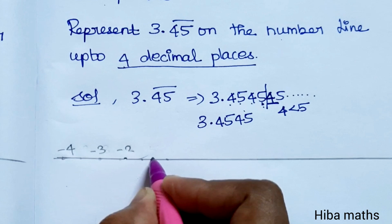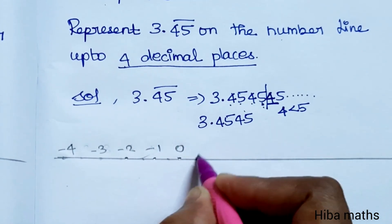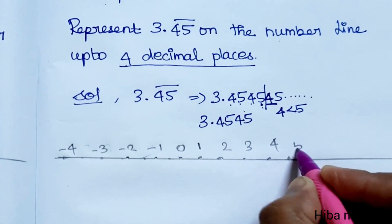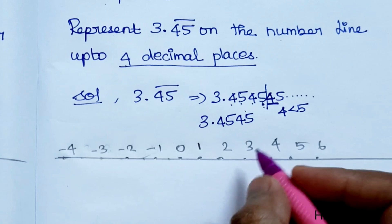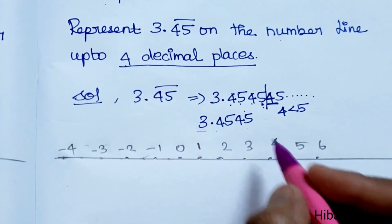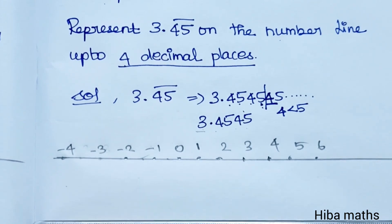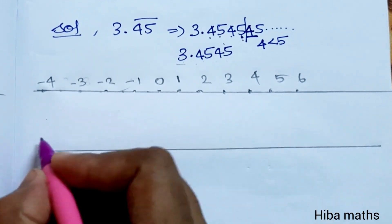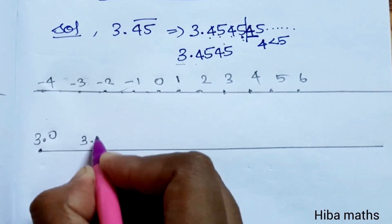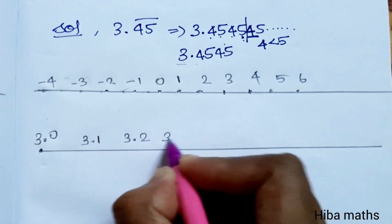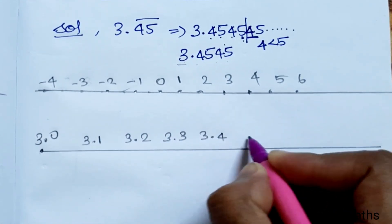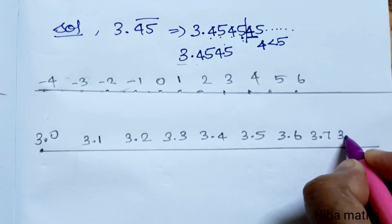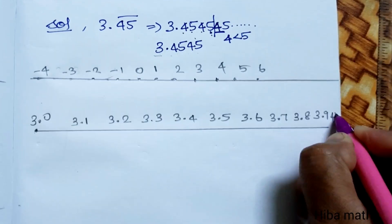On the number line, mark 1, 2, 3, 4, 5, 6 divisions. The number 3.4545 is between 3 and 4. The first point is 3.0. Add values: 3.1, 3.2, 3.3, 3.4, 3.5, 3.6, 3.7, 3.8, 3.9, and then 4.0.